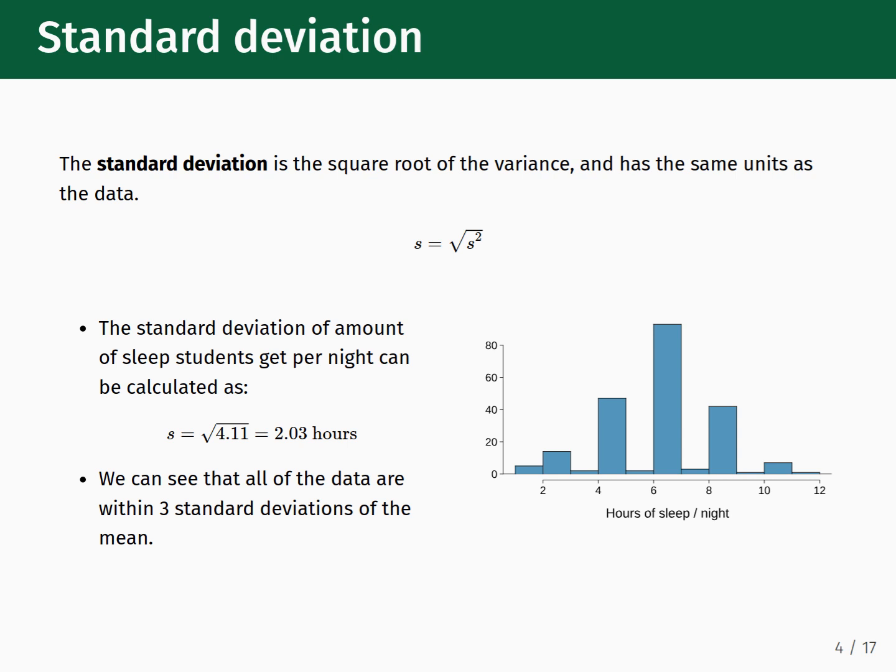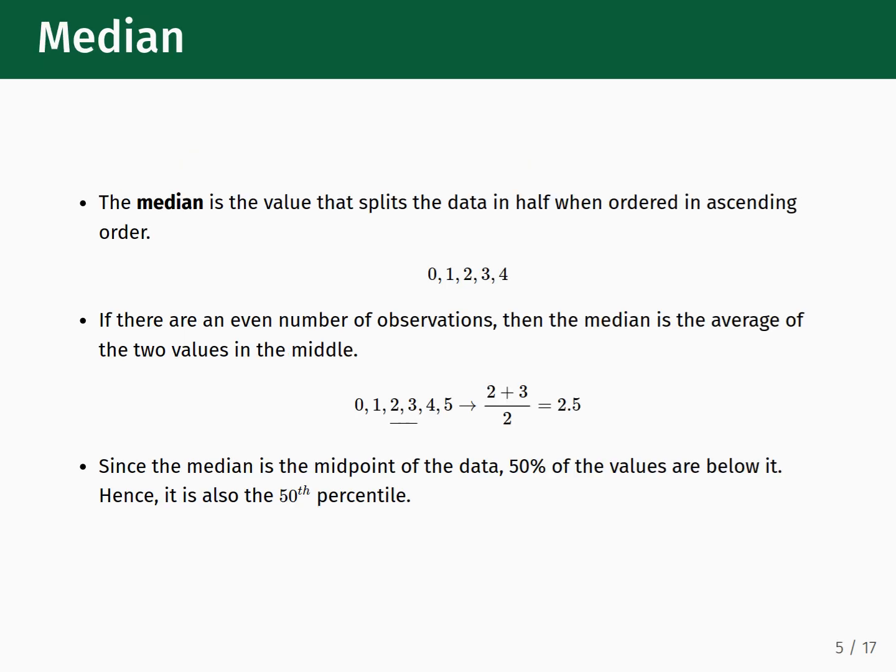The mean, variance, and standard deviation are all connected to one another and present one method for quantifying the center and spread of a data distribution. There are other methods that are available that come with their own pros and cons. For quantifying the center, instead of the mean, you can also consider using the median. The median is the value that splits the data distribution in half after you've sorted it into ascending order.